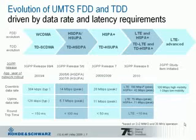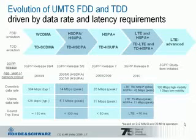Not only data rate improvements are shown here, but also latency improvements — typically measured in round-trip time — with each evolution stage showing improvement over the previous. LTE was expected to be commercially introduced in 2010. There is also a study item initiated in 3GPP on LTE-Advanced, which will make LTE a true 4G system. The ITU has set the requirement for 4G systems to achieve one gigabit per second in low-mobility scenarios, which will be possible with LTE-Advanced, likely as part of Release 10 core specifications.